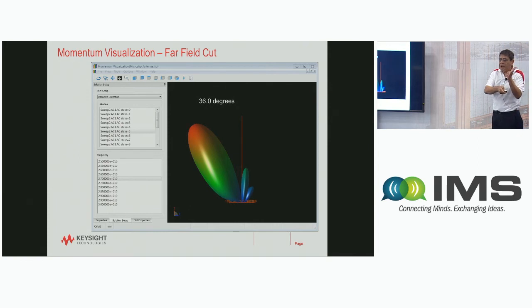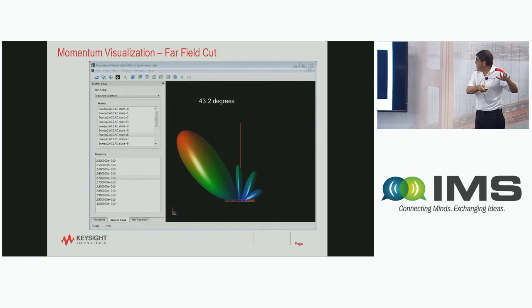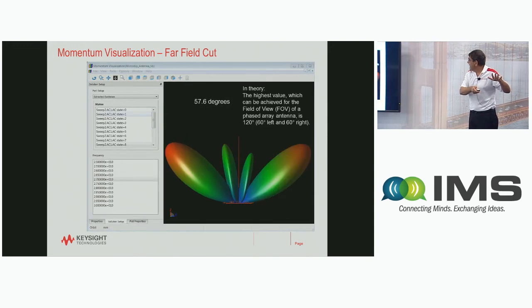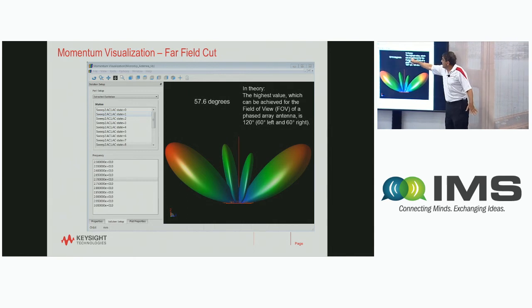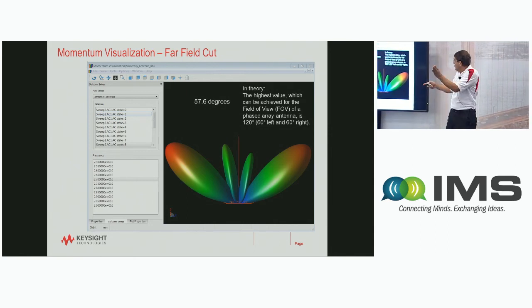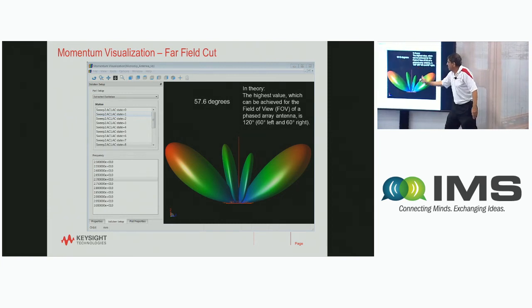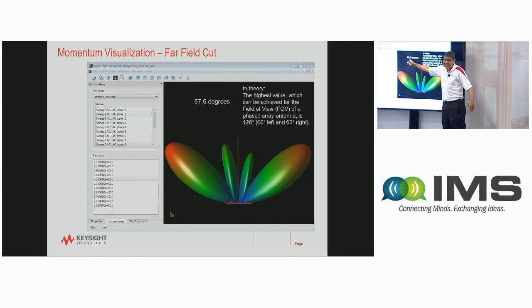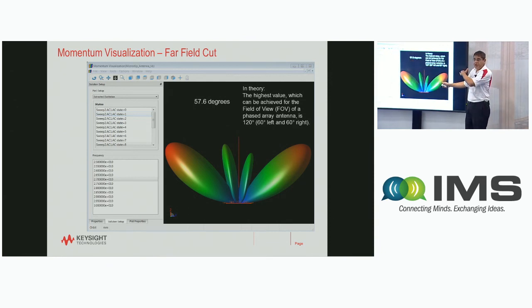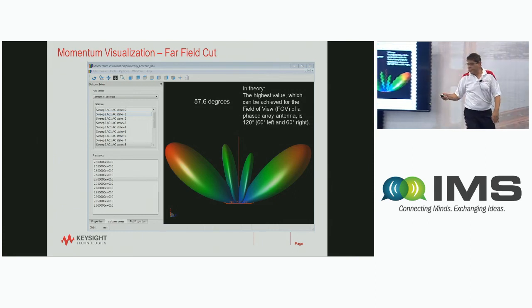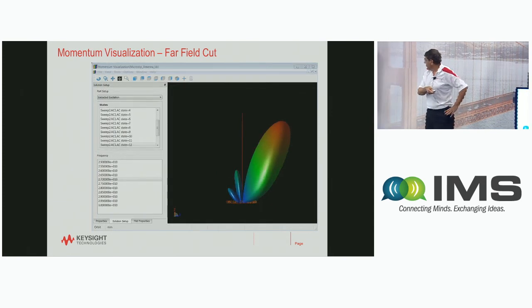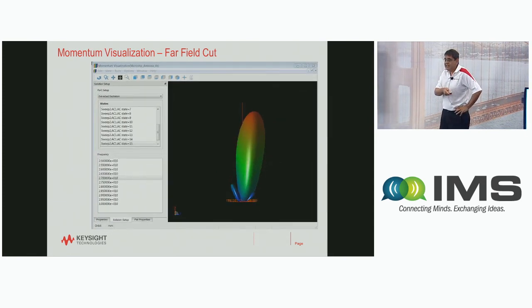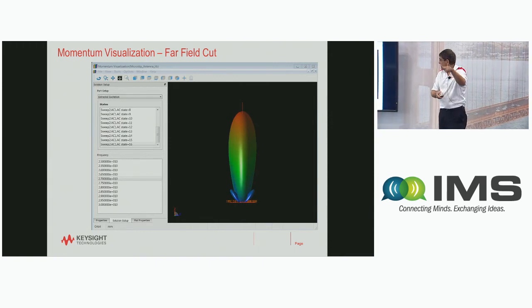You can see that I am steering the beam with the phase shifter — everything implemented at the transistor level, not at the system level. In phased array antenna theory, the maximum look angle is 120 degrees total — 60 degrees to the left and 60 degrees to the right. Notice here I'm approaching 60 degrees at 57.6 degrees, and you start seeing the mirror image at plus and minus 60 degrees. Continuing through all the states, you can steer the antenna across the full range.